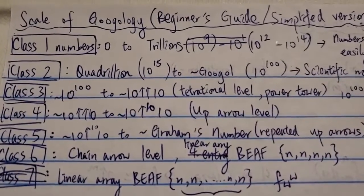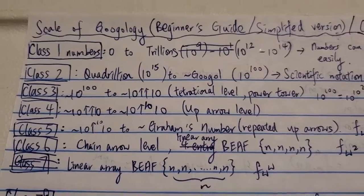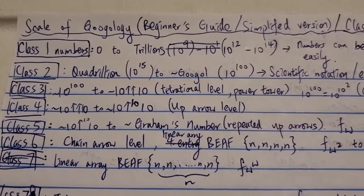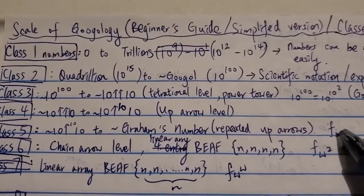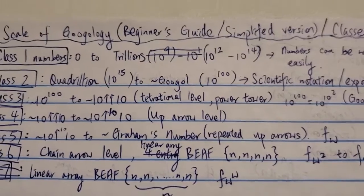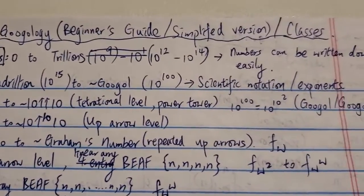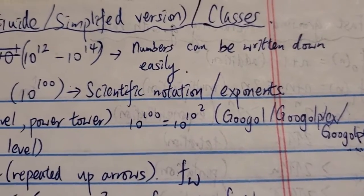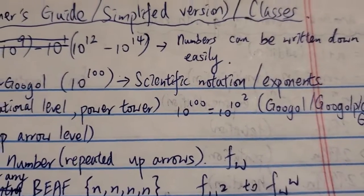Class 1 numbers is basically, in my opinion, from 0 or anything less than a trillion or trillions. Somewhere around up to 10 to the 12 or 10 to the 14, because 10 to the 14 is 100 trillion.